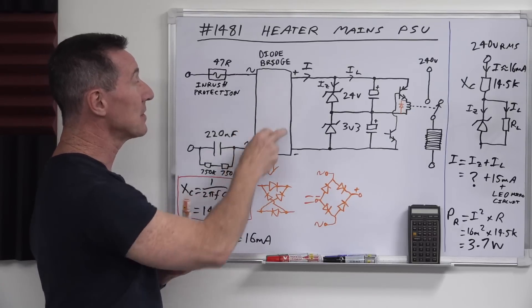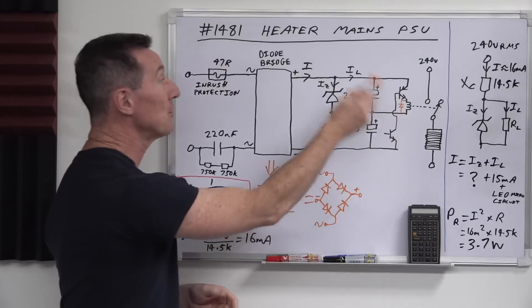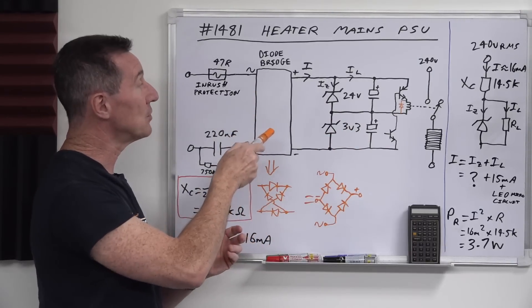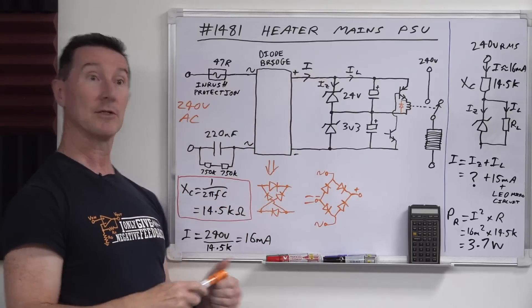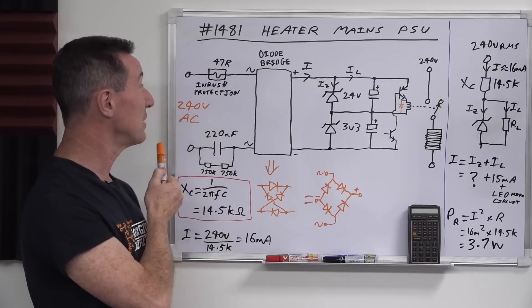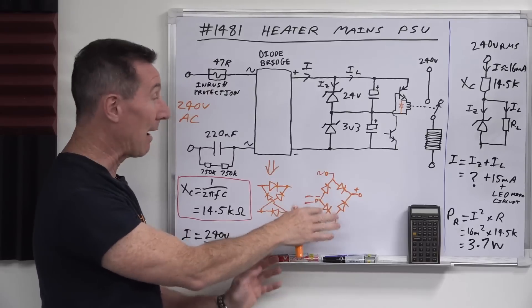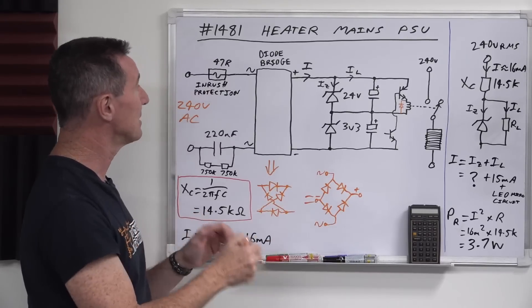Because just the bridge rectifier on its own is not enough to regulate the voltage. You do actually need a regulation element. All the diode bridge rectifier is doing is current steering where the current needs to go. Because I forgot to put it here, you've got 240 volts AC in. We use 240 volts here in Australia. And the bridge rectifier, you've seen, you're used to this configuration of the bridge rectifier, but it's exactly the same as this.